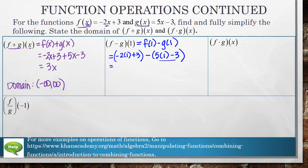Okay, simplifying these out. Negative 2 times 1 is negative 2 plus 3 is 1 minus 5 times 1 is 5 minus 3 is 2. And 1 minus 2 is negative 1.